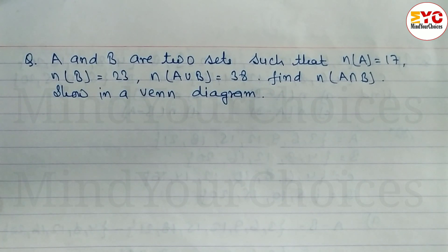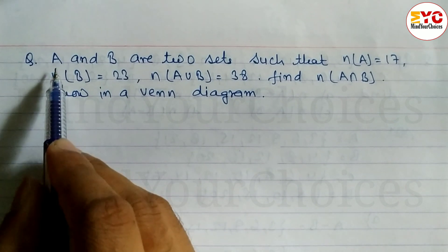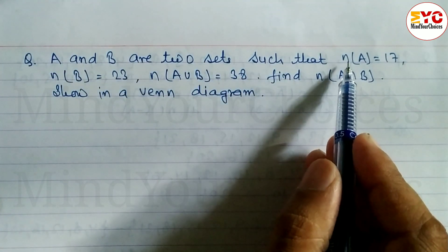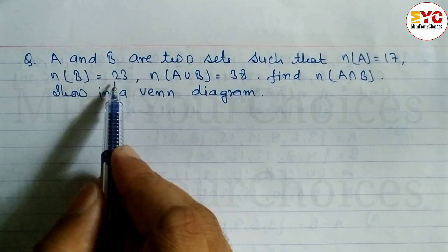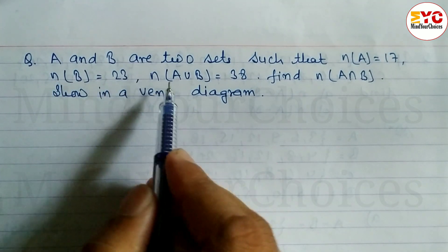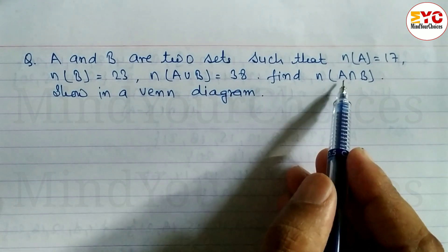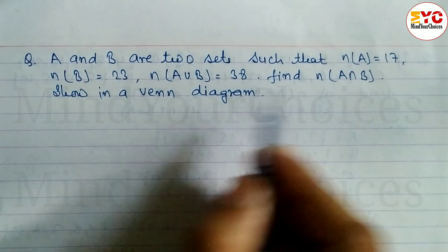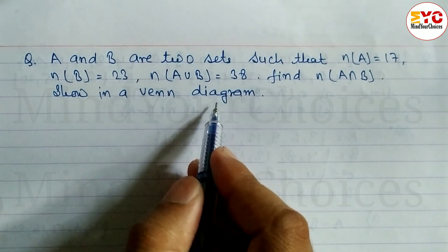This question is taken from class 9 and is also important for class 8. Here we have a question: A and B are two sets such that the cardinal number of A is equal to 17, cardinal number of B is 23, and cardinal number of A union B is 38. We have to find the cardinal number of A intersection B, and show it in a Venn diagram.